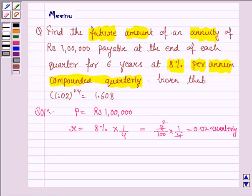Now, the annuity is payable at the end of each quarter for 6 years. The number of periods is 6 × 4 because it is being paid quarterly for 6 years. So N = 24 quarter years.